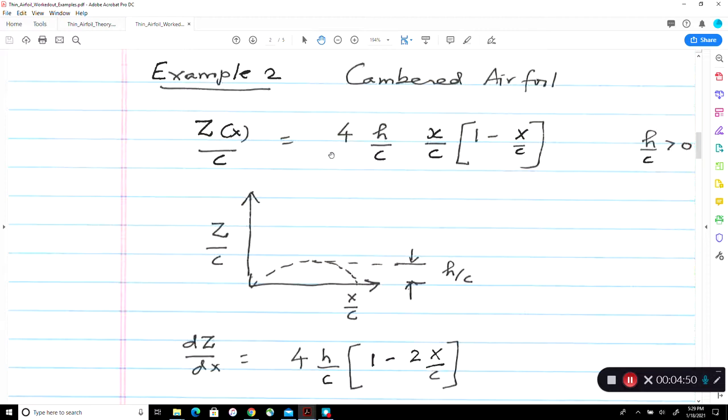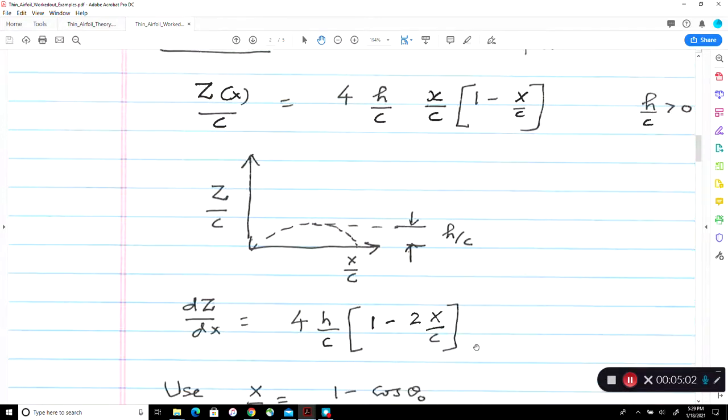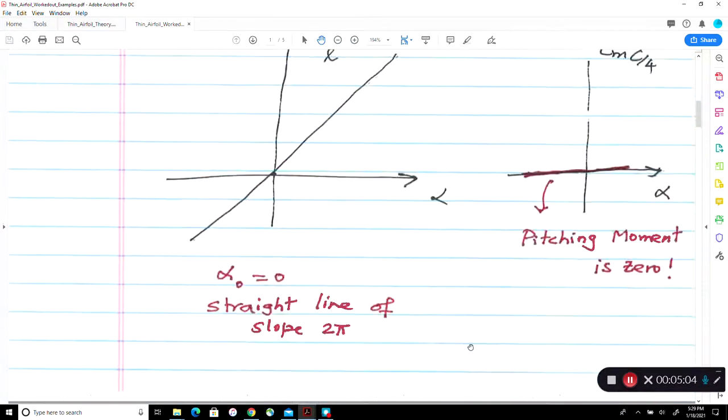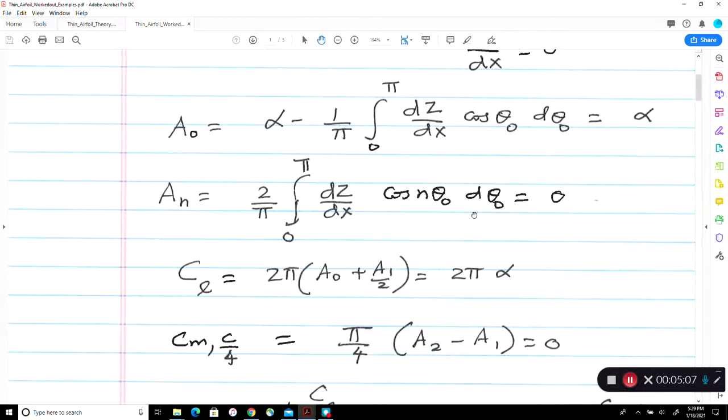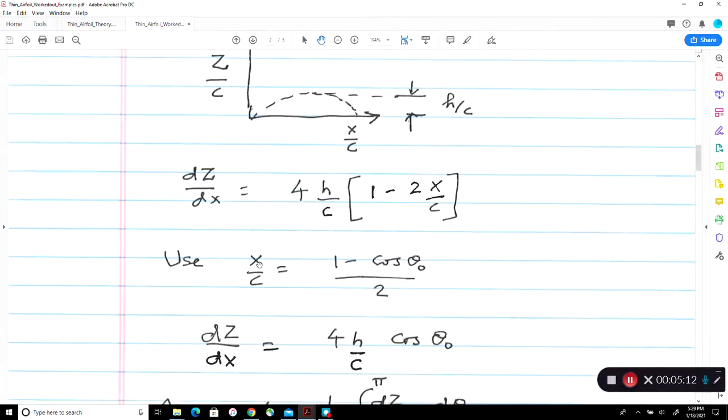So we take dz dx, take a derivative, take x over c inside. Here you get x squared. When you differentiate it, you get this expression. So this is in this form, but all our integrals are in theta form. If you notice it here, all these integrals involve theta. So we need to change from x to theta.